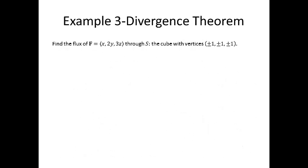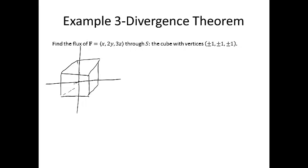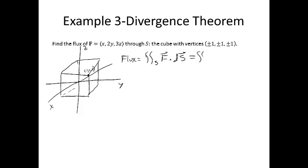Example 3 asks us to find the flux of F through surface S, the cube with vertices at ±1, ±1, ±1. If we draw the cube, our axes go right through the middle — so for instance, (1,1,1) is one vertex. We're asked to find the flux through S. If you were to calculate the surface integral directly, you would actually have to calculate six surface integrals and add them together. But luckily, the divergence theorem says instead we can do the triple integral over the solid region bounded by the cube of the divergence of the vector field.